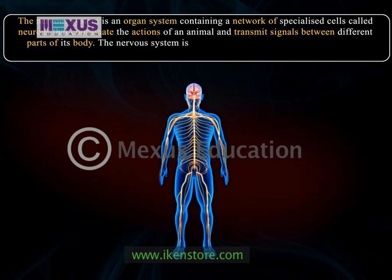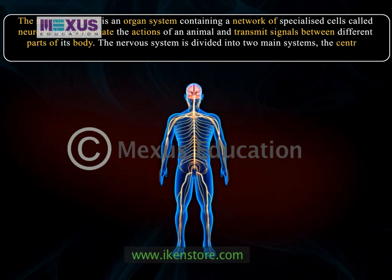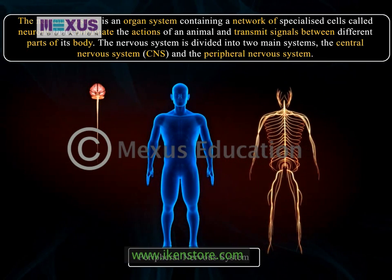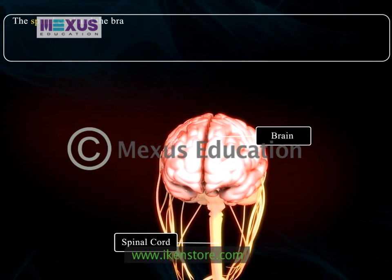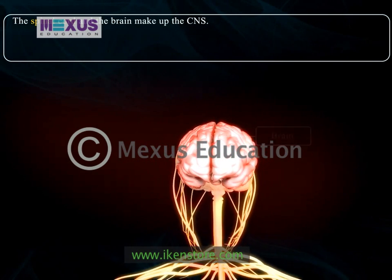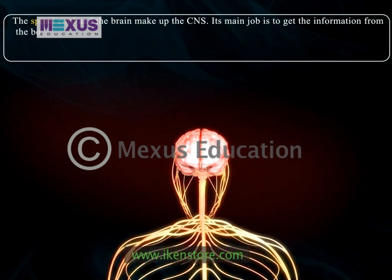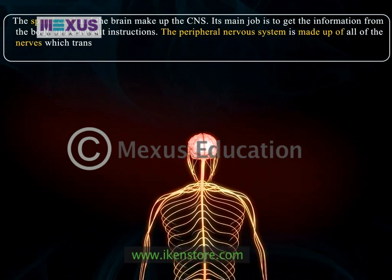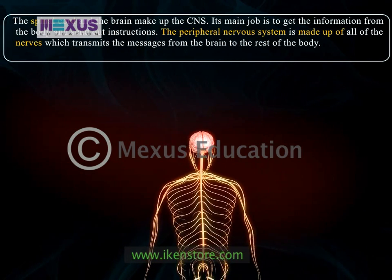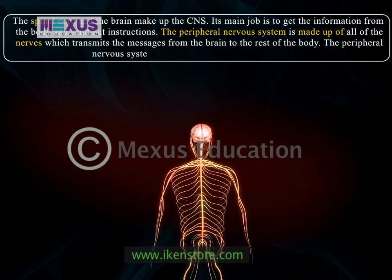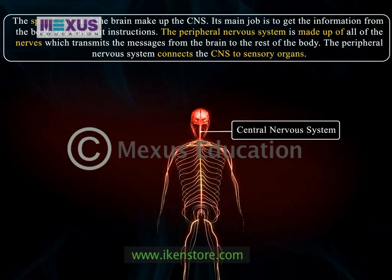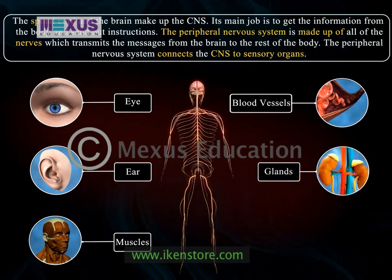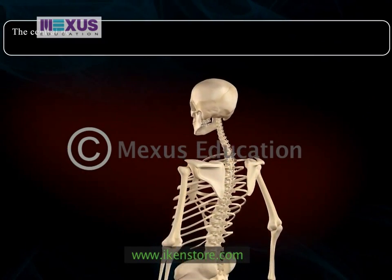The nervous system is divided into two main systems: the central nervous system (CNS) and the peripheral nervous system. The spinal cord and the brain make up the CNS. Its main job is to get information from the body and send out instructions. The peripheral nervous system is made up of all the nerves which transmit messages from the brain to the rest of the body, connecting the CNS to sensory organs such as the eye and ear, other organs, muscles, blood vessels, and glands.